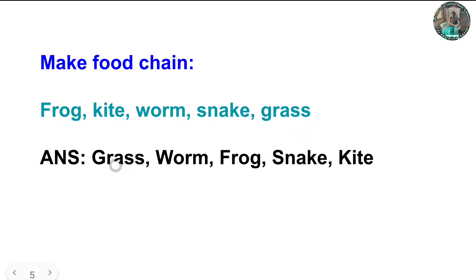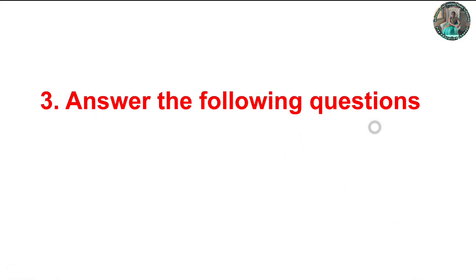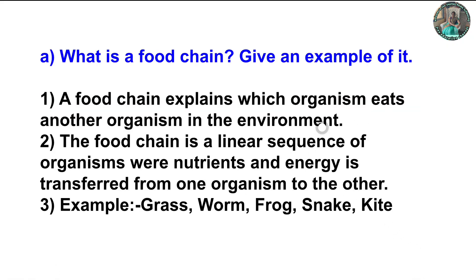The answer is: grass, then worm, then frog, then snake, then kite. This is because kite eats snake, snake eats frog, frog eats worm, and worm eats grass.